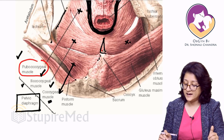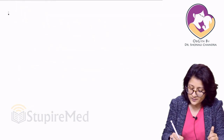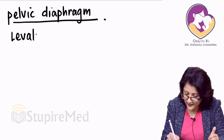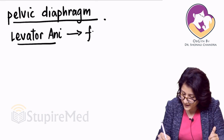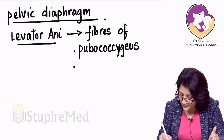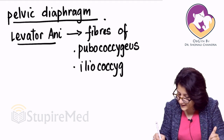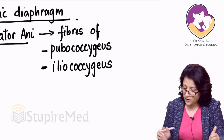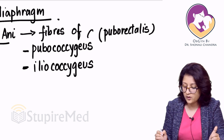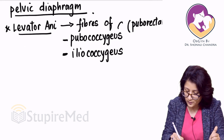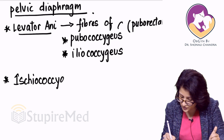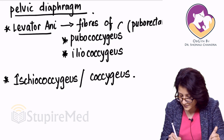Let us write down what constitutes the pelvic diaphragm. The pelvic diaphragm is made up of: levator ani — which has fibers of pubococcygeus and iliococcygeus (puborectalis is not a separate muscle, just the medial-most fibers of pubococcygeus) — and the ischiococcygeus (coccygeus) muscle. These make up the pelvic diaphragm.